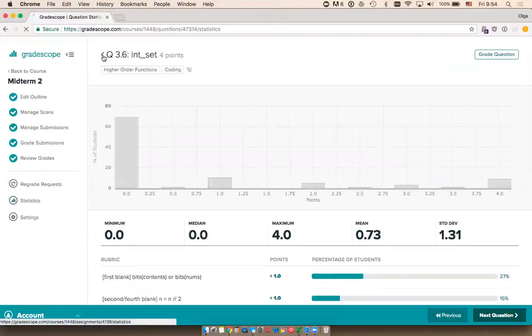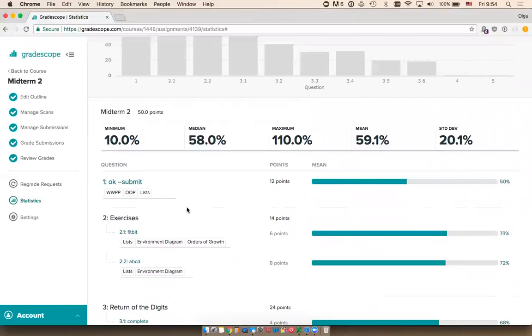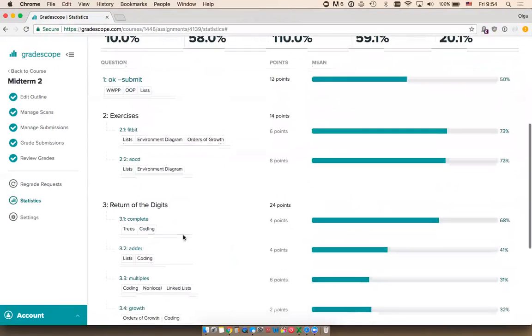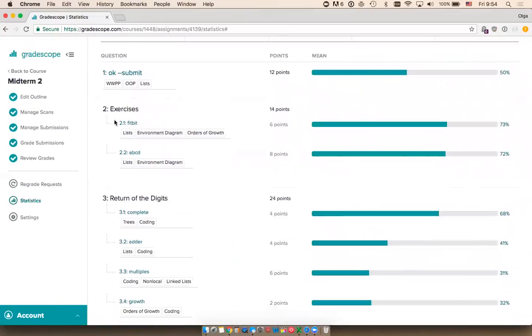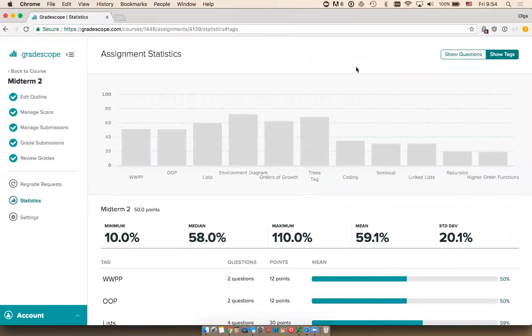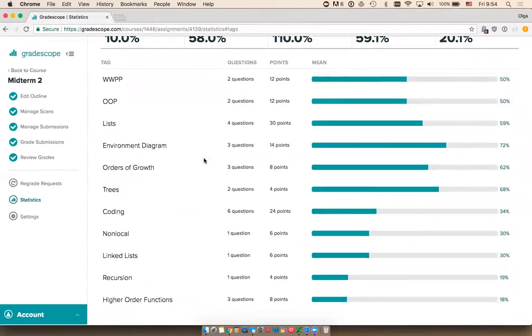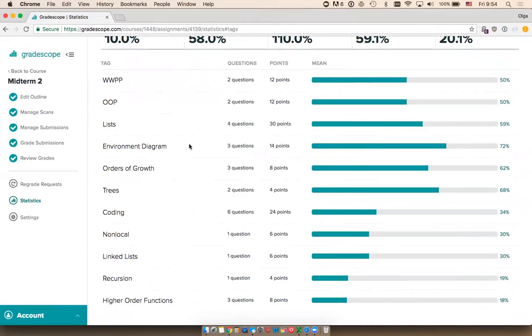These were all the rubric items for question 3.6, and I can see that only 19% of my students left that question blank. So perhaps it was actually that they were struggling with the concept and not that the question was towards the end. One other thing I can do with statistics is tag my questions with course objectives or concepts. It looks like questions 2.1 and 2.2 on this exam were testing students' abilities to draw environment diagrams. I can look at a tag-level analysis of how students did on these various concepts. Students did mostly know how to draw environment diagrams, but maybe they struggled with recursion. Perhaps that's a topic I might want to review more during my next lecture.